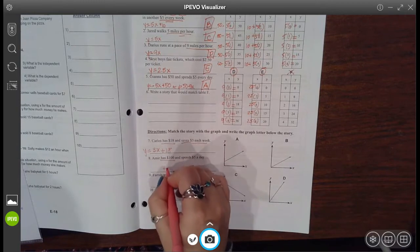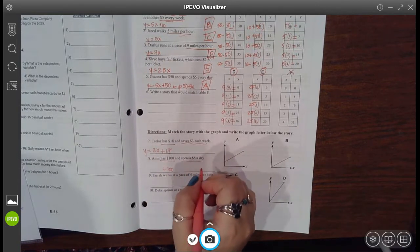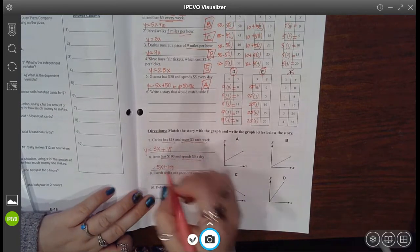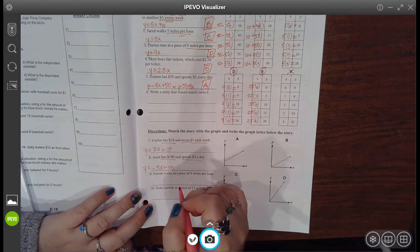Amir has 100, so he starts with 100. And then he spends $5 a day. So this is going to go down by $5 times however many days it is, and that's equal to how much he has.